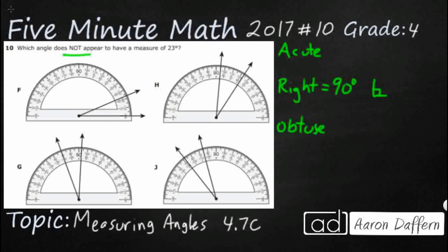So acute is anything that is going to be less than 90 degrees, so it's going to be something that kind of looks like that. And we're going to be looking at acute angles because 23 is definitely less than 90.